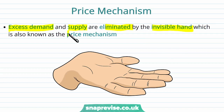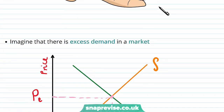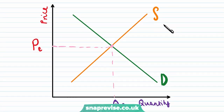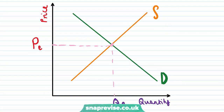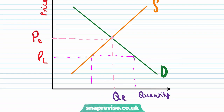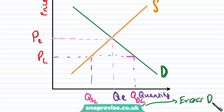It's in the invisible hand that we see the price mechanism occur. So imagine that there is excess demand in a market — how do we demonstrate this? Well, let's say that we have a price which is lower, and then we would end up drawing out our lines like this. This point here is going to be the quantity demanded at this low price, and this would be the quantity supplied at that low price. The difference between them is our excess demand.